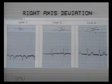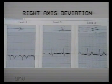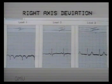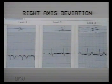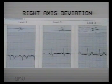This ECG shows right axis deviation. Right axis deviation is seen in right ventricular hypertrophy, right bundle branch block, and anterior wall infarct.